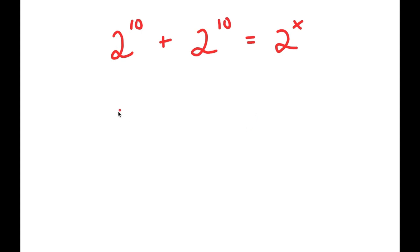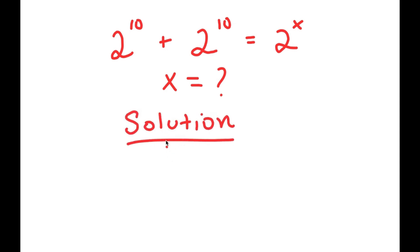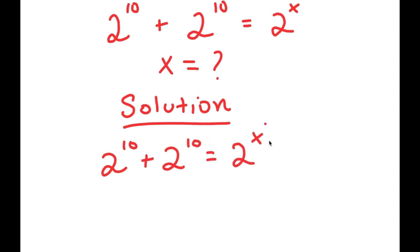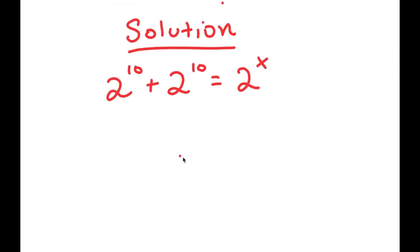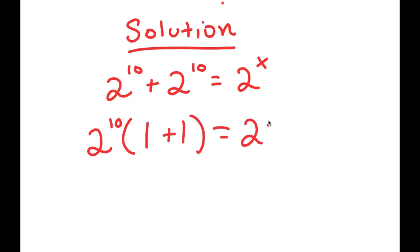In this problem, I have 2 to the power of 10 plus 2 to the power of 10 is equal to 2 to the power of x, and I want to find the value of x. I'm going to factor out 2 to the power of 10 from the left-hand side. 2 to the power of 10 divided by 2 to the power of 10 is 1, so I get 2 to the power of 10 times (1 plus 1) equals 2 to the power of x.